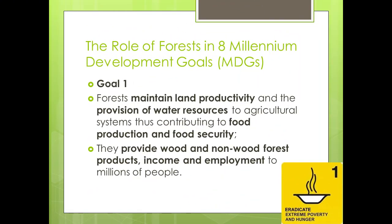In Goal Number One, it states to eradicate extreme poverty and hunger. Forest comes into play by providing land productivity and provision of water to agricultural lands to produce high-valued crops for consumption. Forest also provides environmental goods and services, which create an avenue for income-generating livelihoods.